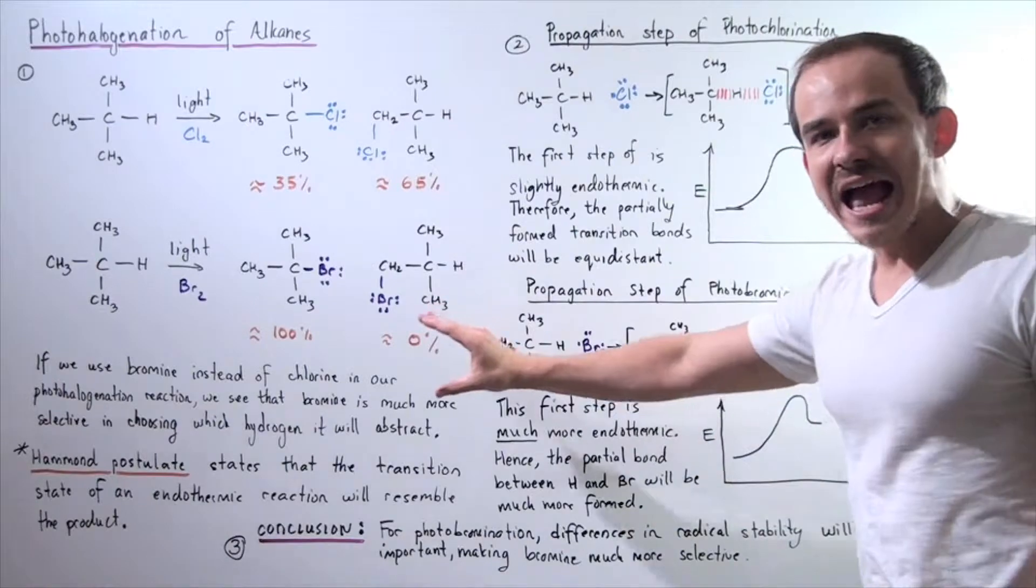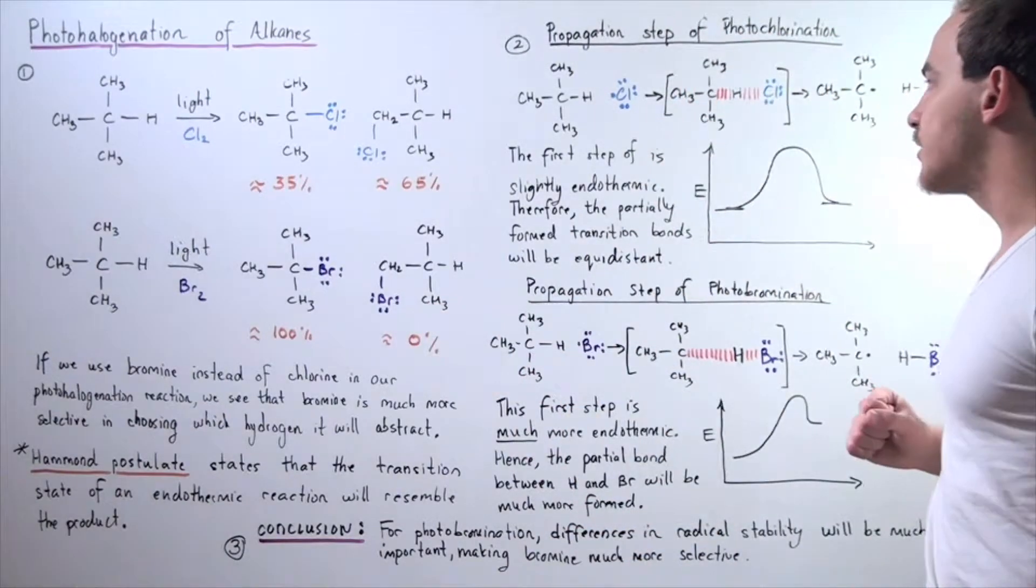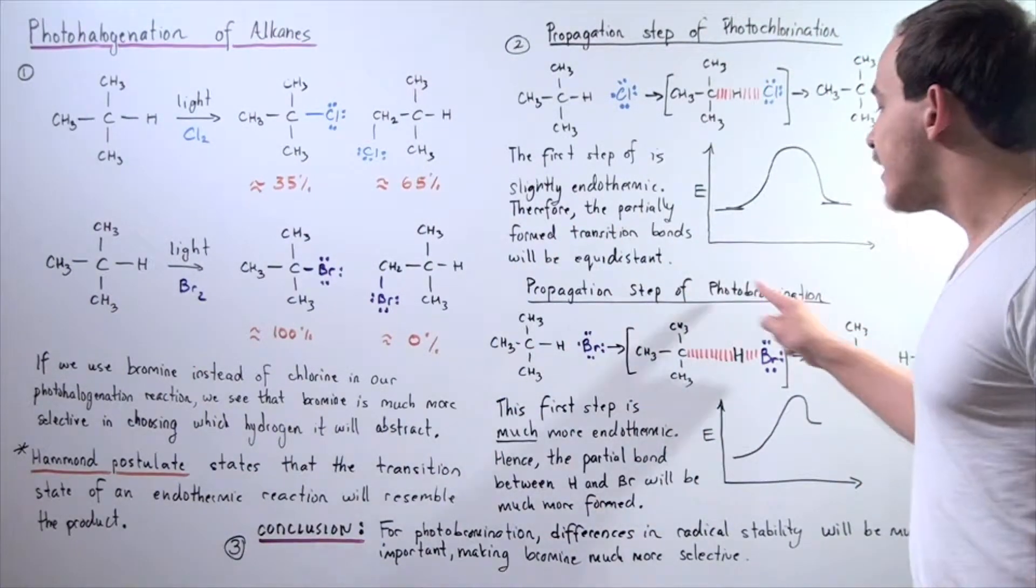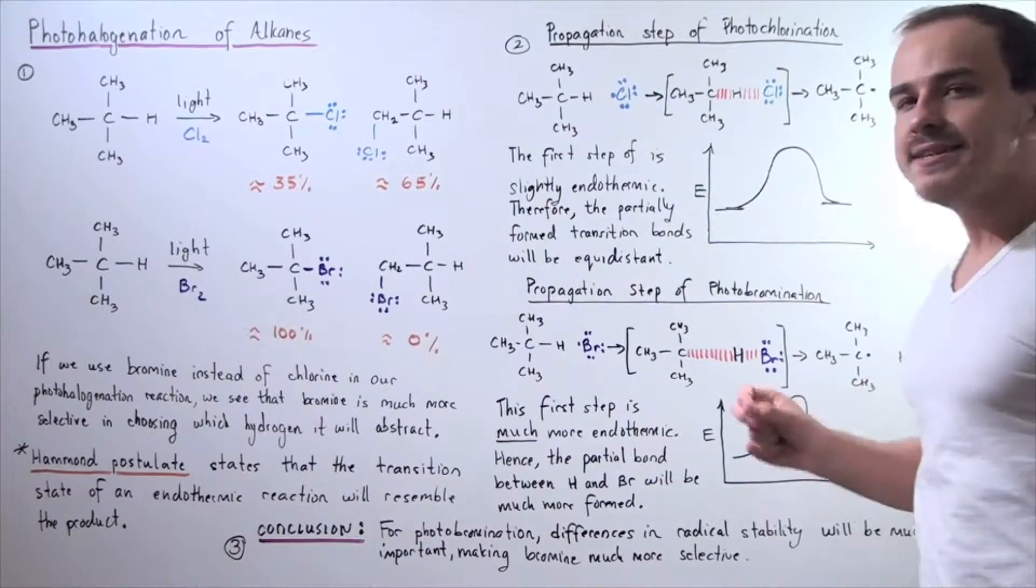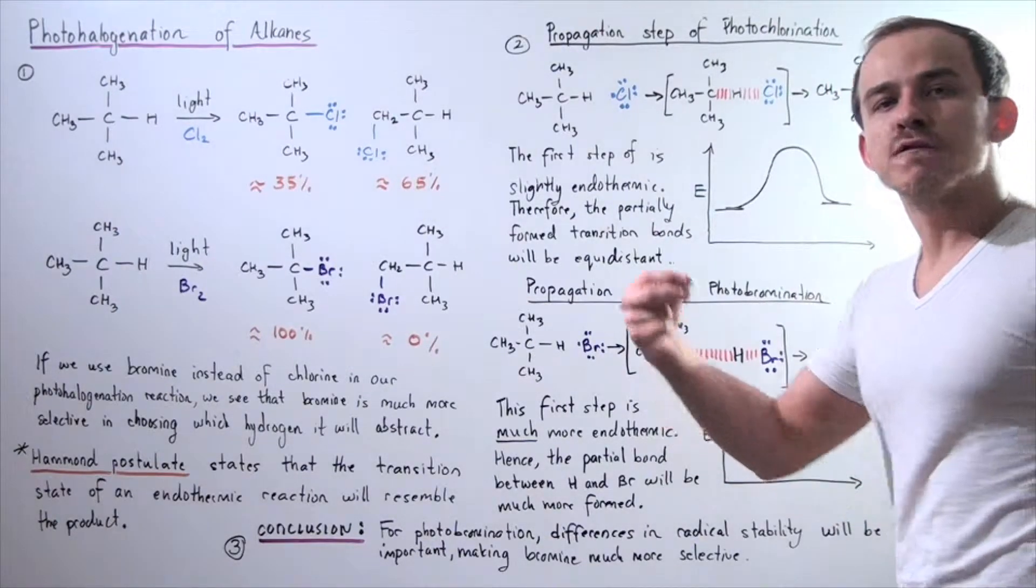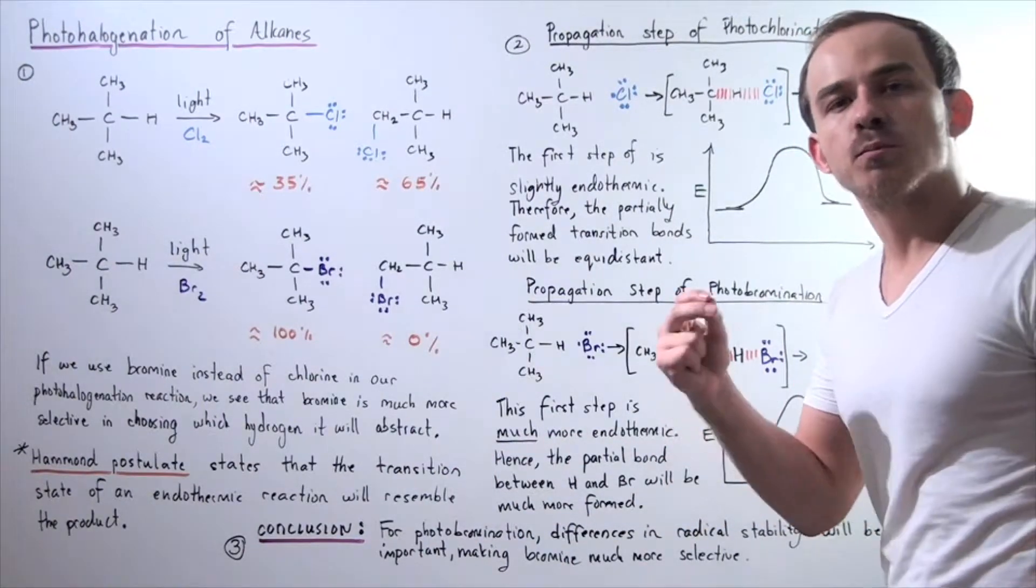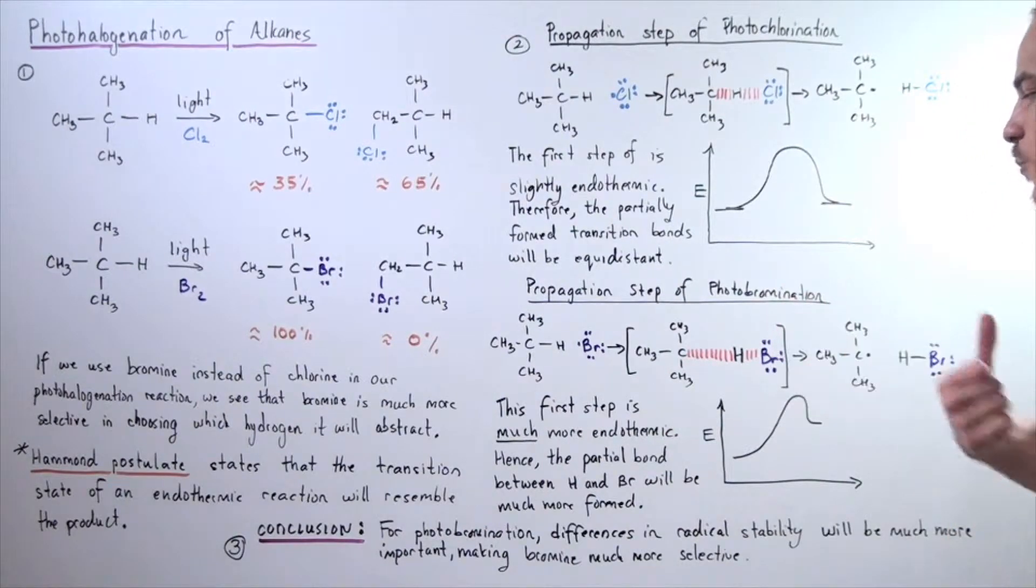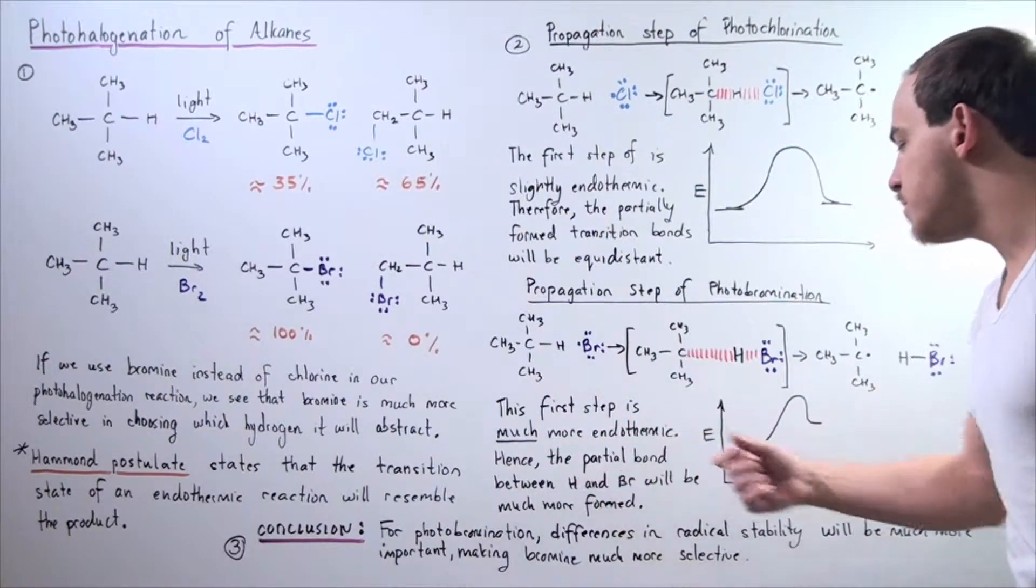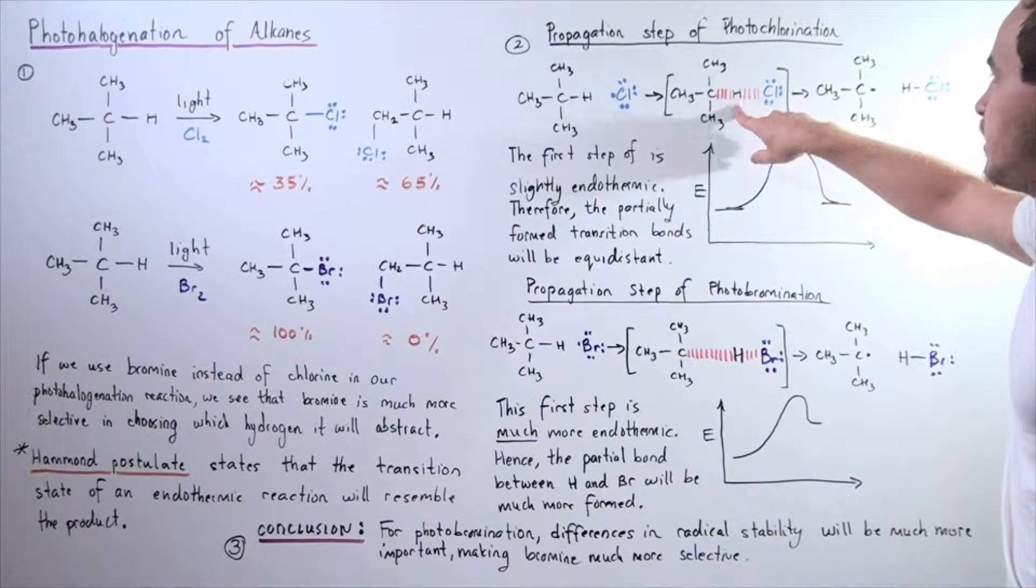Notice that this reaction is much more endothermic than this reaction. In fact, this is so much more endothermic that if we examine our transition state, we see that this H-Br bond is much more formed and this C-H bond is much more broken. So, the first step is much more endothermic. Hence, the partial bond between H-Br will be much more formed than the partial bond between H-Cl.